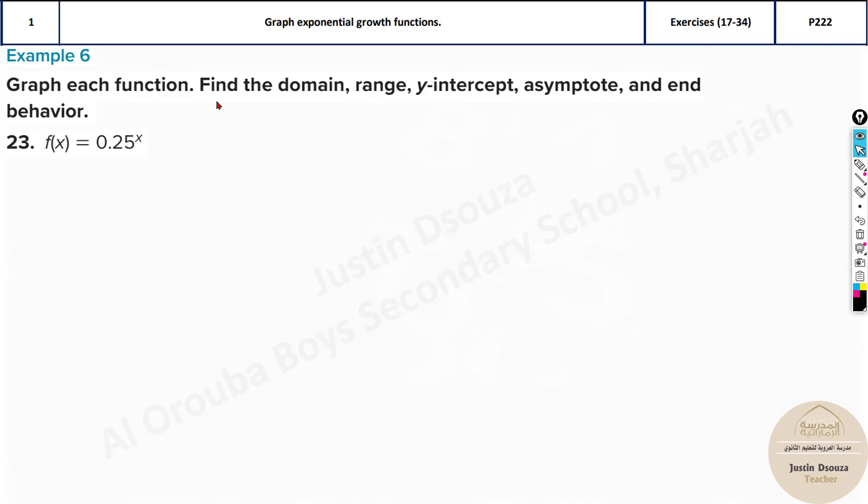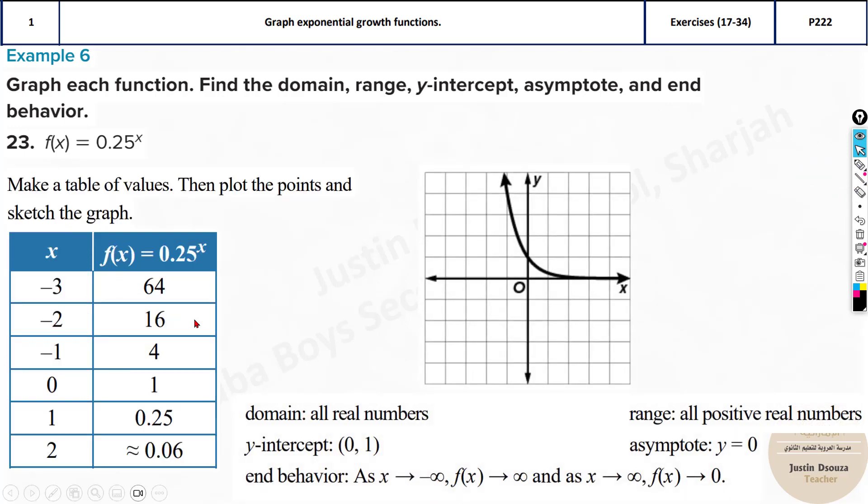Graph each function, find the domain range y-intercept, asymptote, and end behavior. Basically, you have to graph. Now, you know the graphing is basically by x and y table. This is the table you do. Take the function, put any random value of x, and then substitute, and then plot the points.